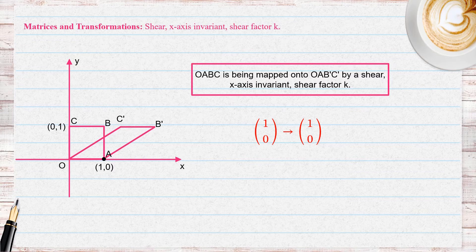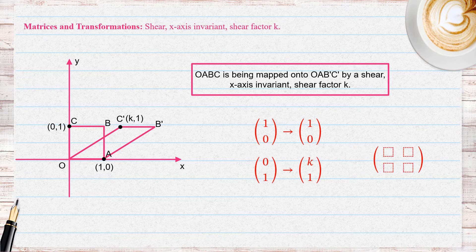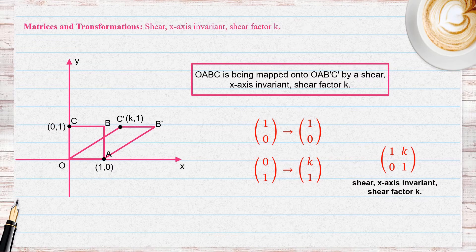We can consider the point (0, 1) and how it has been mapped onto the point C dash, which should have coordinates (K, 1). So (0, 1) is being mapped onto (K, 1). Combining these two mappings gives us the matrix representing a shear parallel to the x-axis with shear factor K.